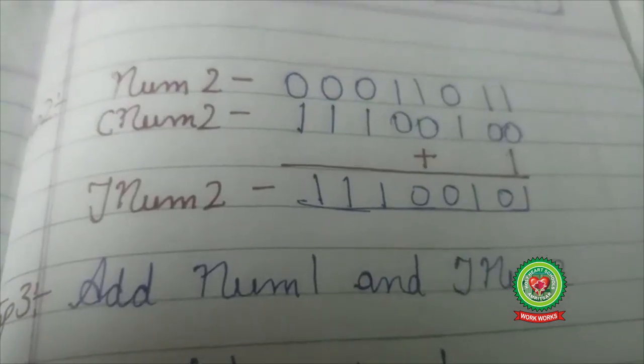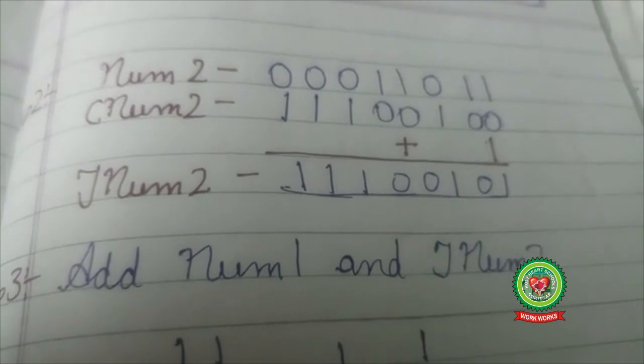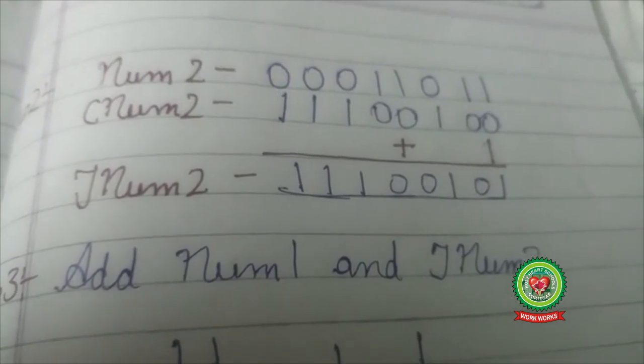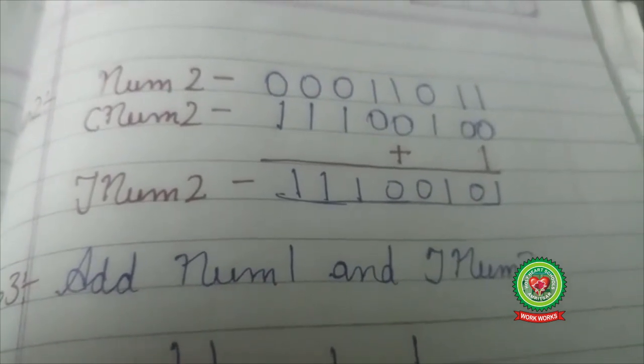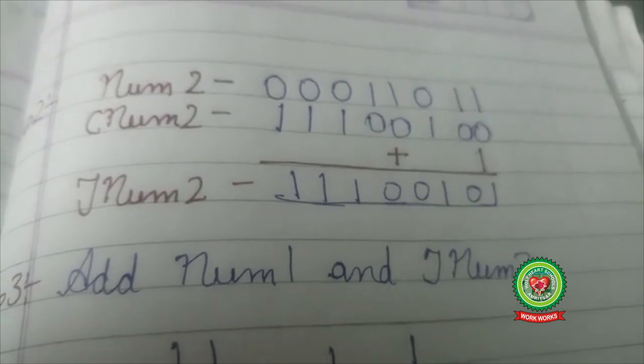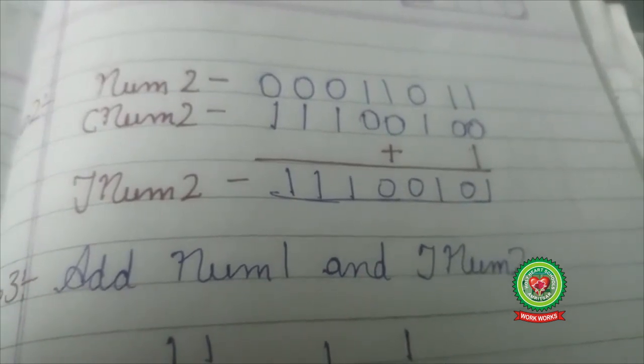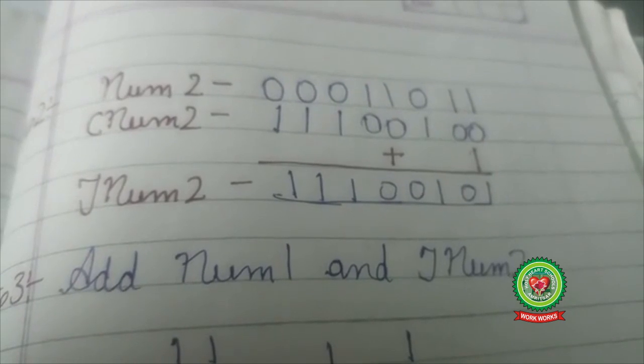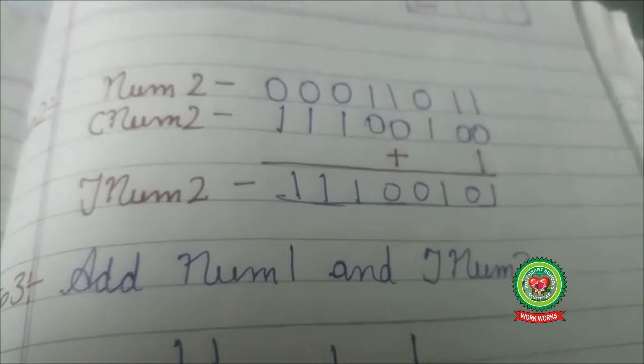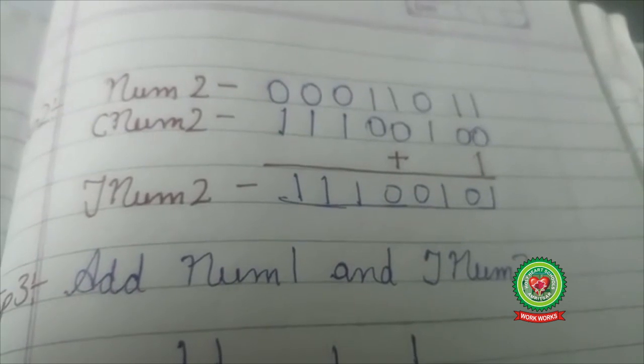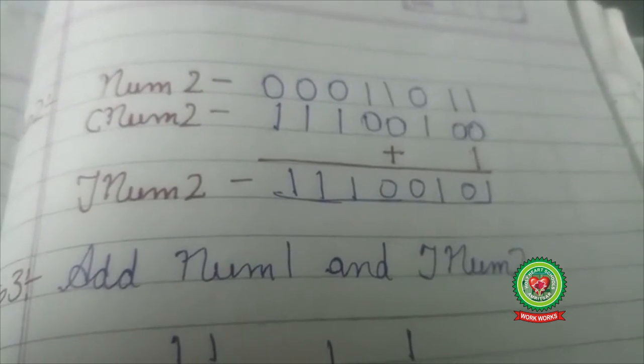Step 3. In step 3, I am going to add num1 and two's complement of the number 2 that I had stored in a variable T num2. So my step 3 is add num1 and T num2.